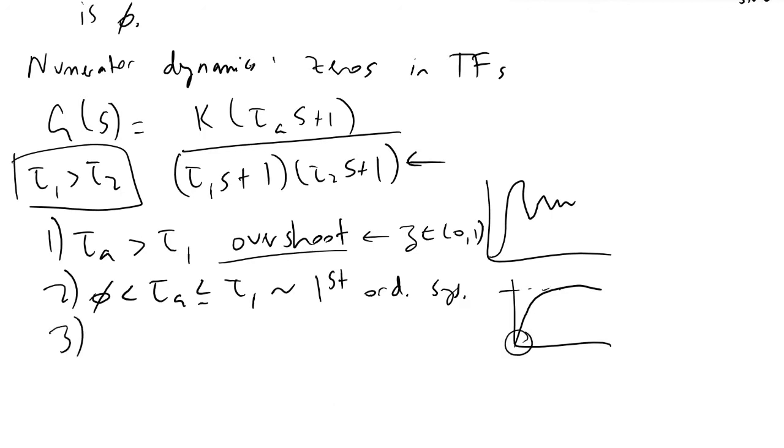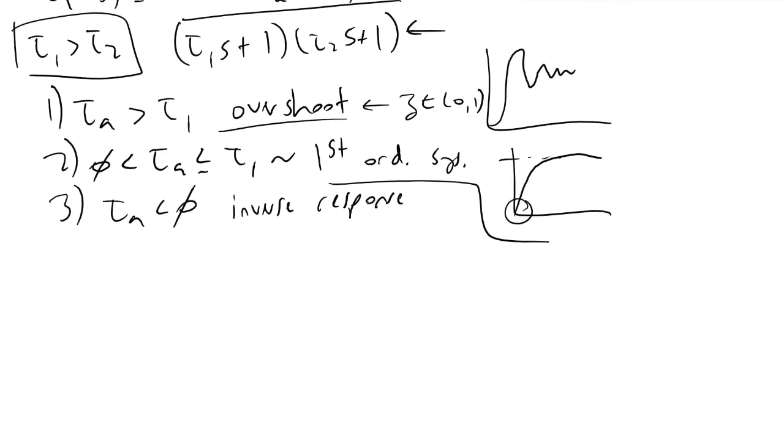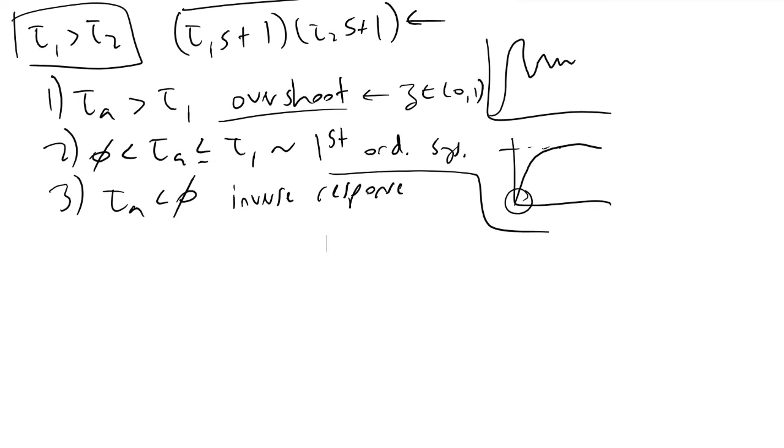Finally, if tau_a is less than zero, we will get something referred to as inverse response. Inverse response is counterintuitive because when we apply some kind of step input to a system, we get a different reaction from what we'd expect before the system corrects itself and trends towards what we theoretically expect to happen.